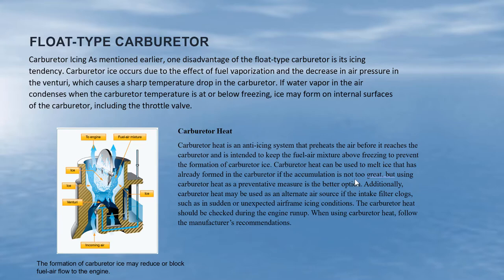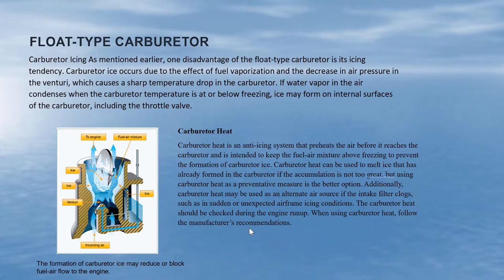Using carburetor heat as a preventive measure is the better option. Additionally, carburetor heat may be used as an alternative air source if the intake filter clogs, such as in sudden or unexpected airframe icing conditions. Carburetor heat should be checked during the engine run-up; when using carburetor heat, follow the manufacturer's recommendations.